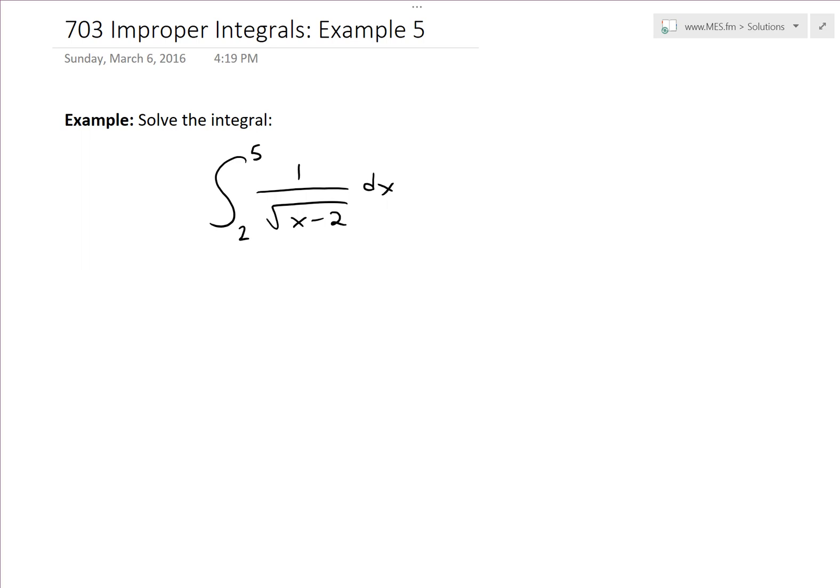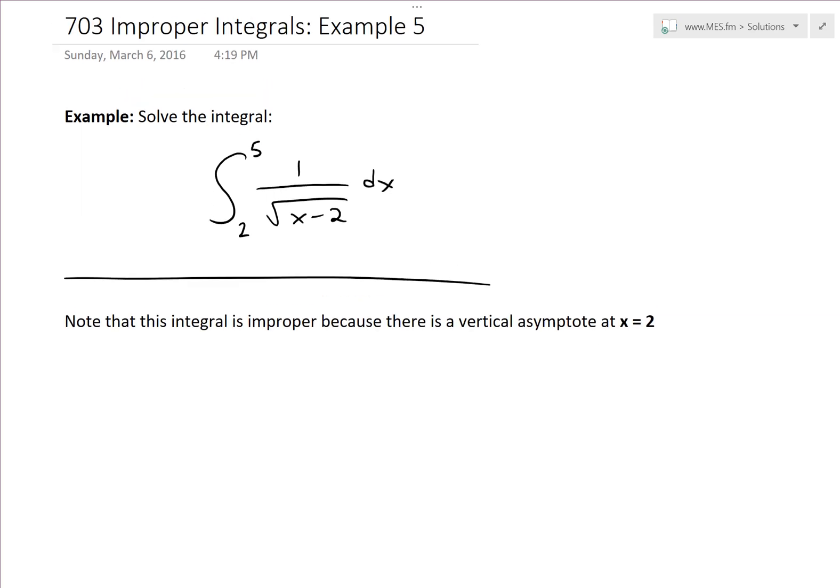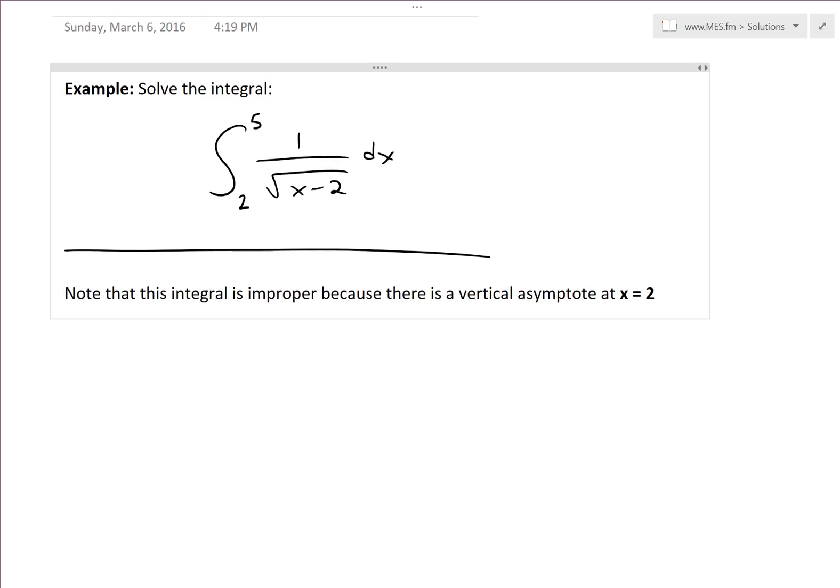The first thing to note from this function: this integral is improper because there is a vertical asymptote at x equals 2. If you plug in x equals 2, you get 2 minus 2, which is 0, and 1 divided by 0 goes to infinity.